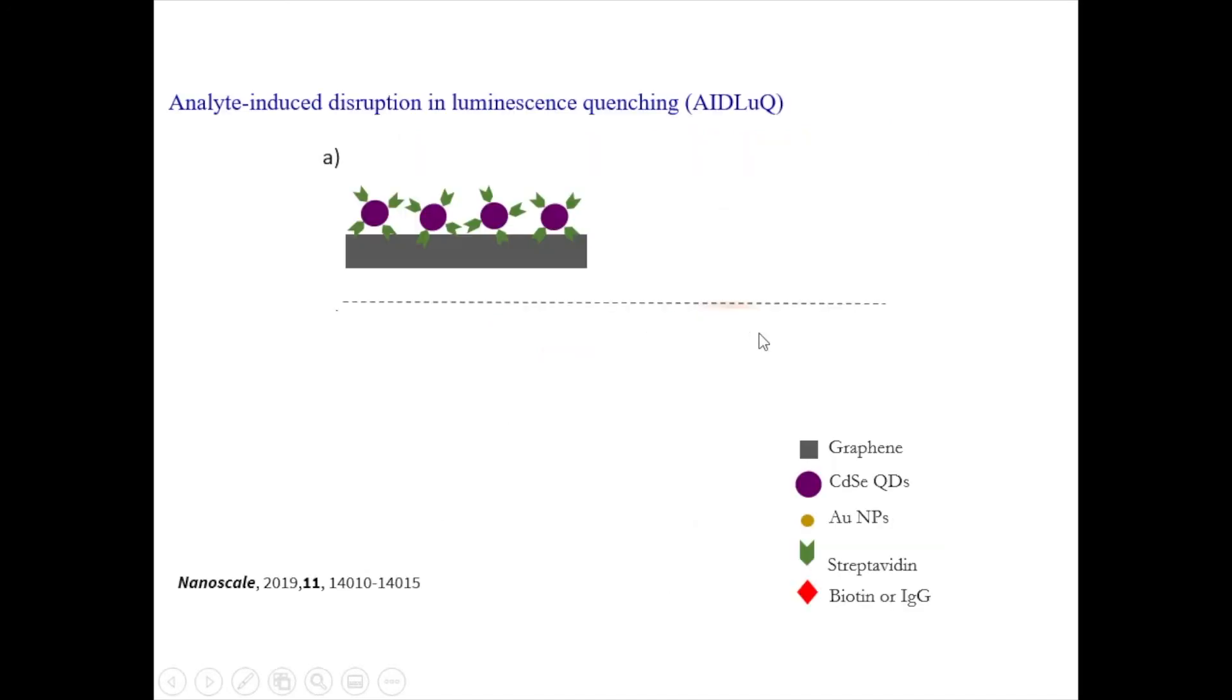So going beyond this, we developed a new and easy technique that can rapidly detect without the need for expensive instrumentation or without the need for waiting for hours to actually look at the analyte. So this is called Analyte-Induced Disruption in Luminescence Quenching. I know that's a long term. We simply call it AIDLUCK.